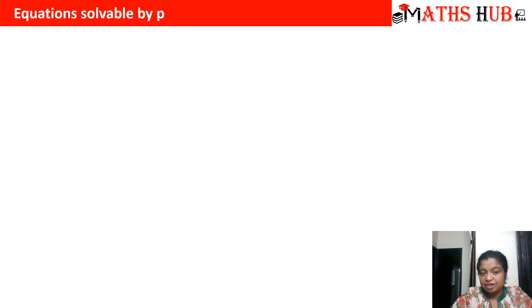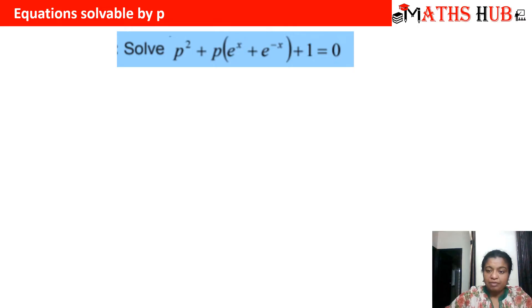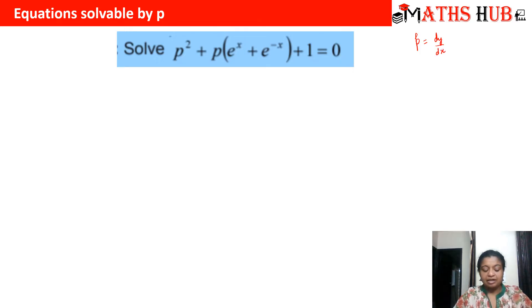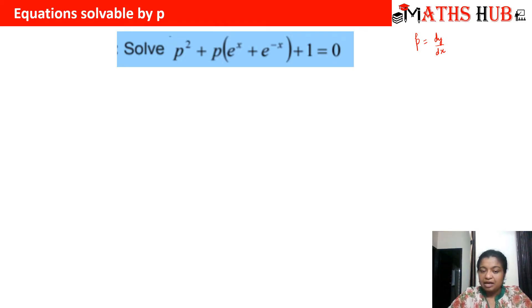When we say that the equations are solvable by P, P means the derivative dy/dx. The identification that a differential equation will be solvable by P is: if any differential equation of order 1 and higher degree can be factorized into linear factors of P, then we can solve it by the method of solvable by P.